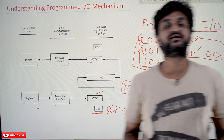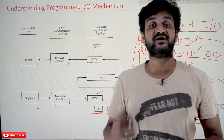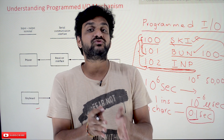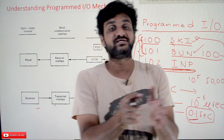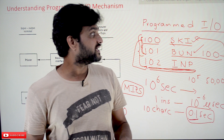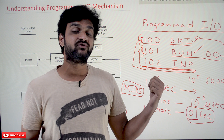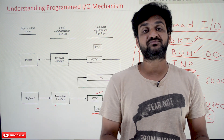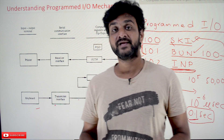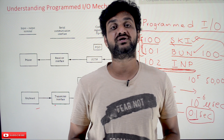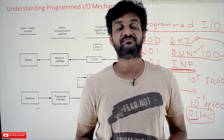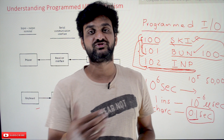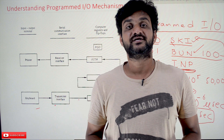To avoid this demerit, we can use the interrupt-driven I/O mechanism. In our next class we will try to understand how the interrupt-driven I/O mechanism works. Hope you got clarity on the programmed I/O mechanism and its demerits. Thanks for watching. Please subscribe to our channel, press the bell icon for the latest updates, post any doubts in the comments below, give us a like, and share this video with your friends.